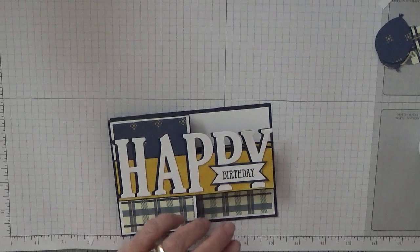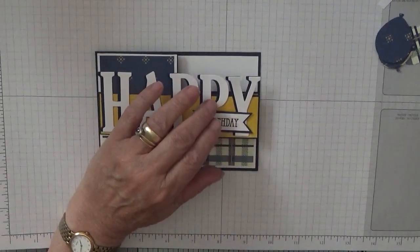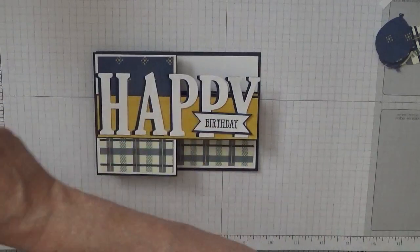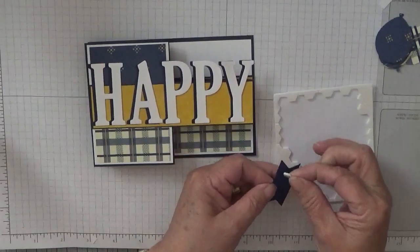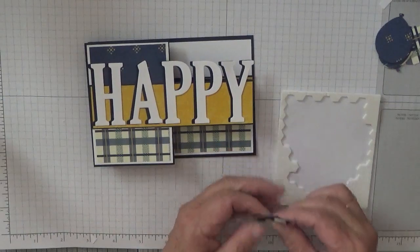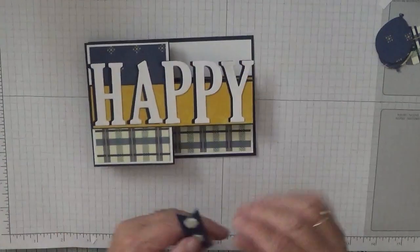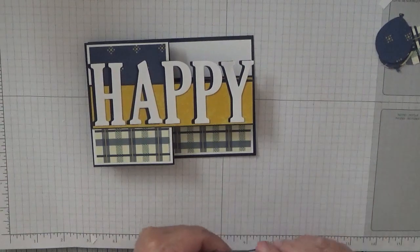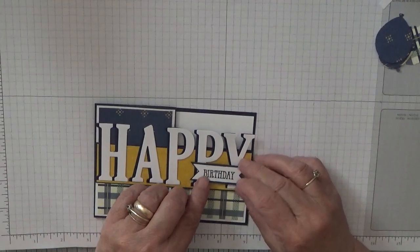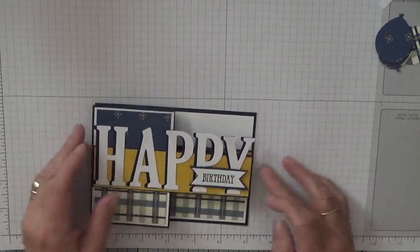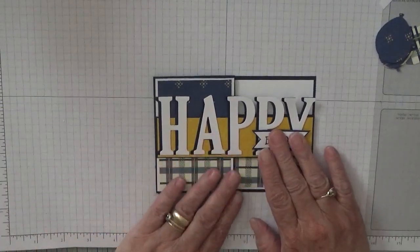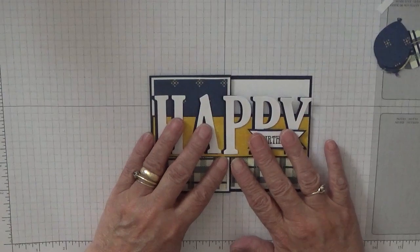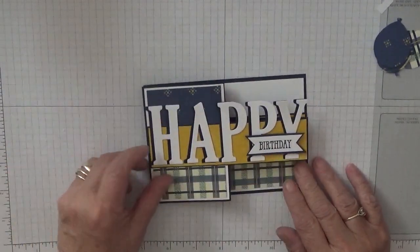And then the word Birthday we put on Dimensionals over the Y and the P. So let's get some Dimensionals. That's a large one. Just need to get them off. Let me just stick that there. Hope I've had it all in camera. I wasn't taking much notice of the monitor.